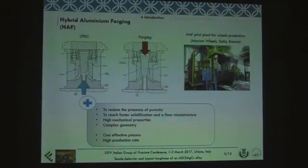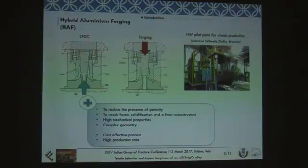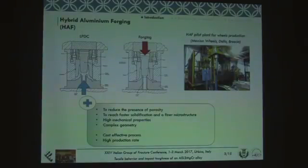Why do we want to study this alloy? This alloy is currently used for an innovative process called hybrid aluminum forging for the production of structural components. There is just a pilot plant, so the process is still under development, but our aim is to understand the potential mechanical properties of the material.